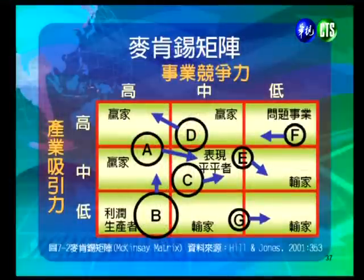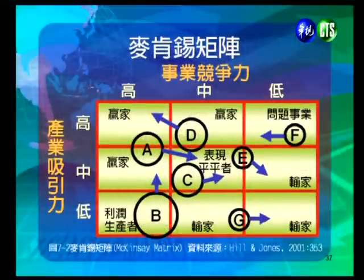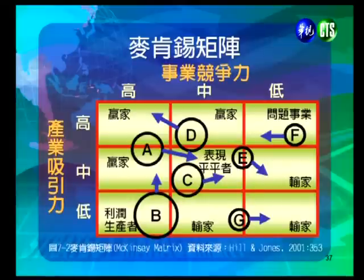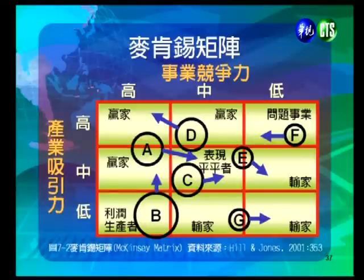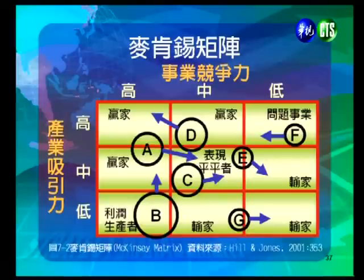在麥肯錫矩陣圖中，圈圈大小代表事業單位營業額的大小，英文字母代表不同單位名稱。總公司根據各單位位置可決定對應策略。例如G公司應避免再投入資金並尋覓退出時機；B公司屬於金牛，應維持目前盈餘並加強防衛；A公司應集中資源全力經營以維持領先地位；F公司則應思考如何克服競爭弱勢，如無法有效經營應退出。